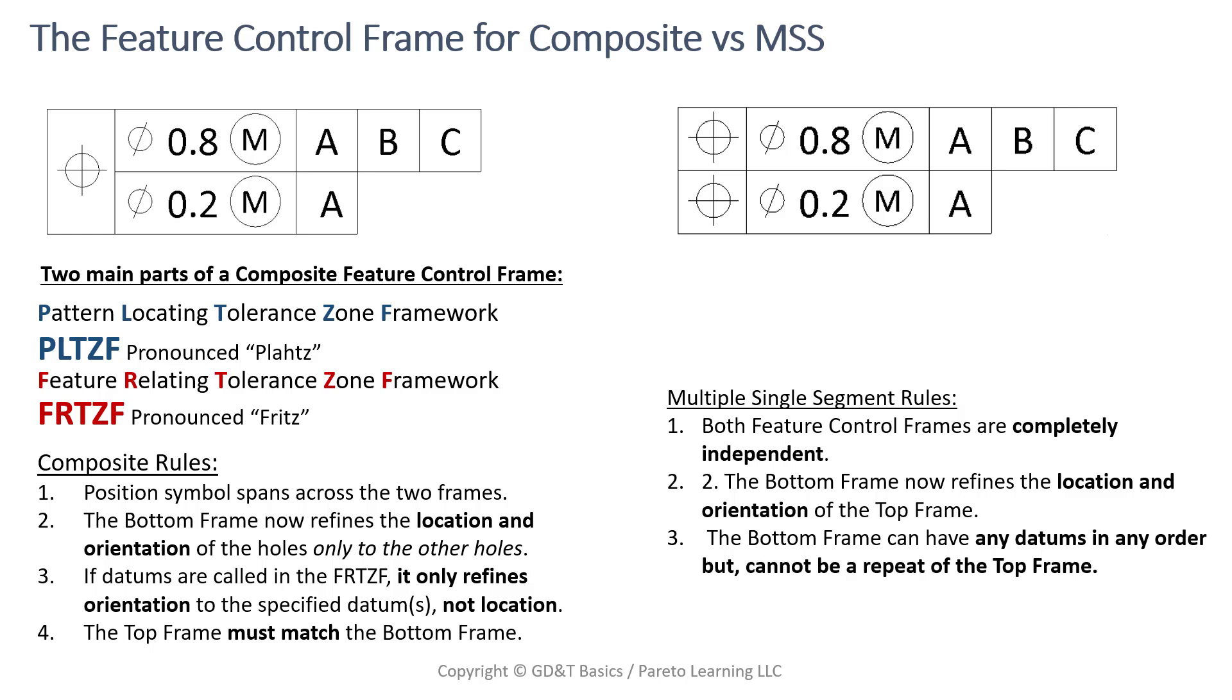So it's locating it there, it's going to be a more generous one. On both top frames for these, we have 0.8 for the top frame, 0.2 for the bottom frames. But when we're talking about composite, you can call it top and bottom frame, call it PLTZF and FRTZF, whatever you want to call it. The top frame is no different than normal position tolerancing. So none of the rules here have changed. If we just had a single frame, it would mean the exact same thing. And likewise over here with multiple single segment, this is just a normal position callout.